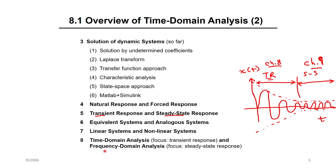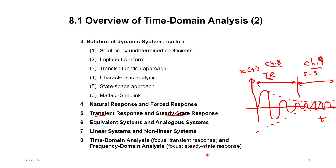To summarize: time domain analysis in Chapter 8 focuses on the transient response, and frequency domain analysis in Chapter 9 focuses on the steady state. That's a quick review of what we are going to do in Chapter 8 and Chapter 9. Next, we're going to solve and see what the transient response looks like for a first order system, and then move to the second order system. See you in the next video. Thank you.